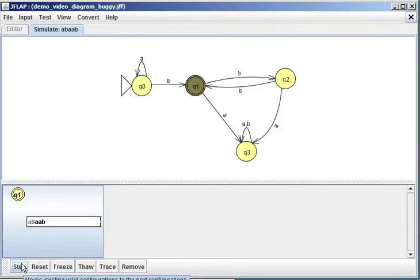Now the next letter to process is a B. So we're going to go to Q1. So we step, and we end up at Q1, and now we need to process an A.